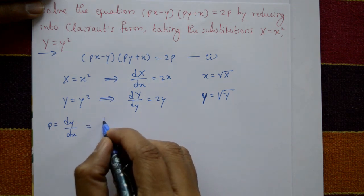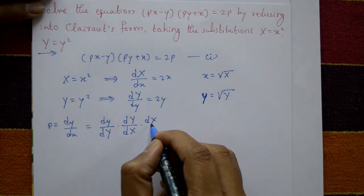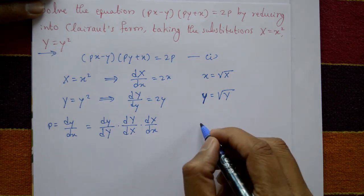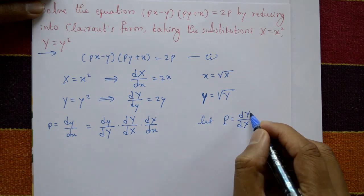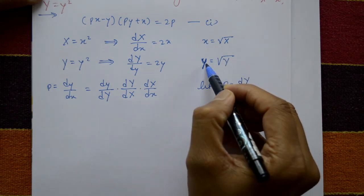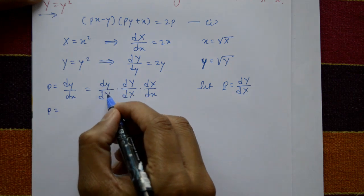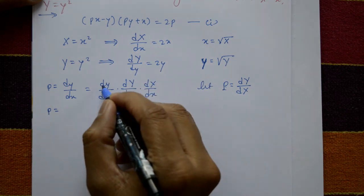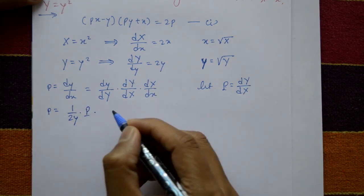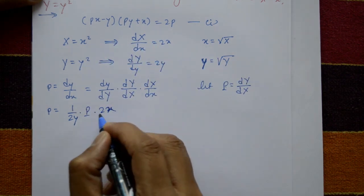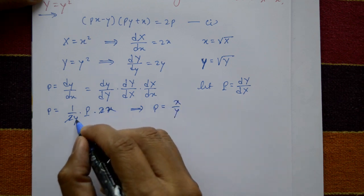We can write dy/dx as (dy/dY)·(dY/dX)·(dX/dx). Let capital P = dY/dX. Then small p = (1/(2y))·P·(2x), so the 2s cancel and small p = (x/y)·P.